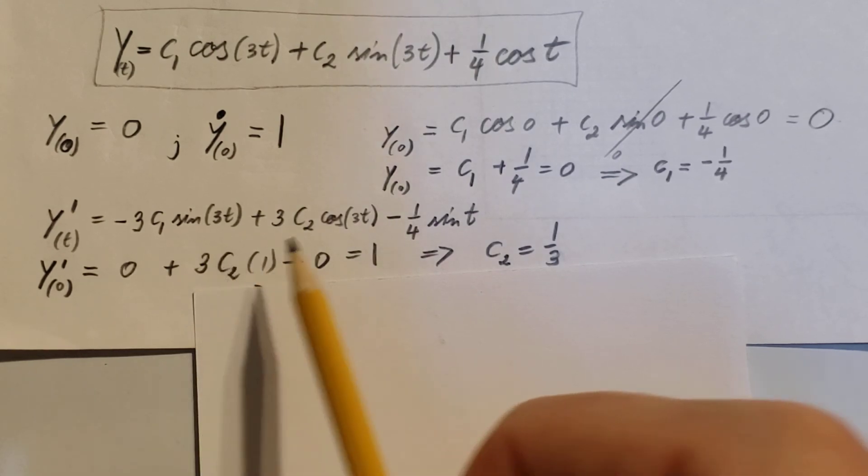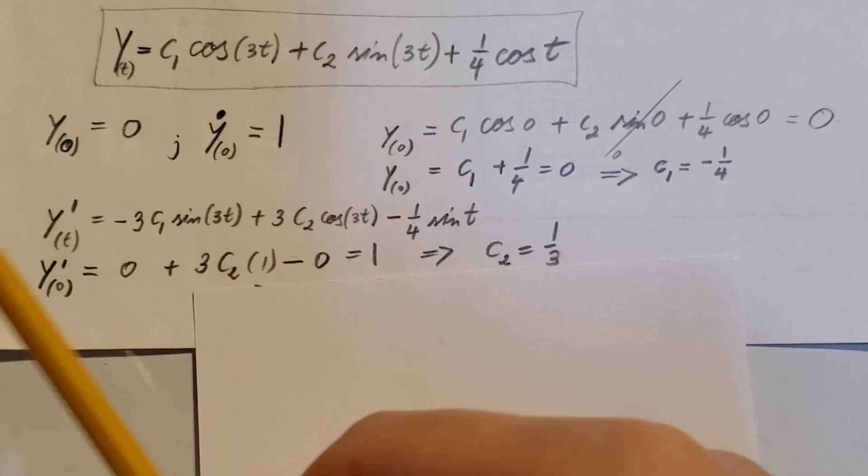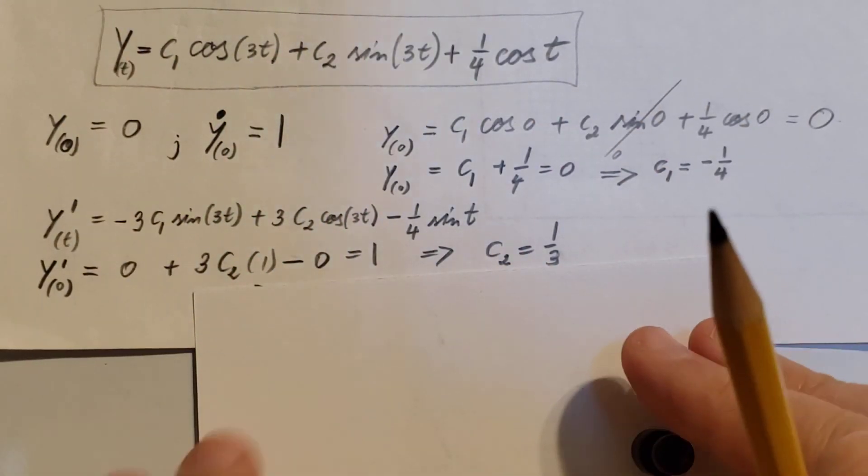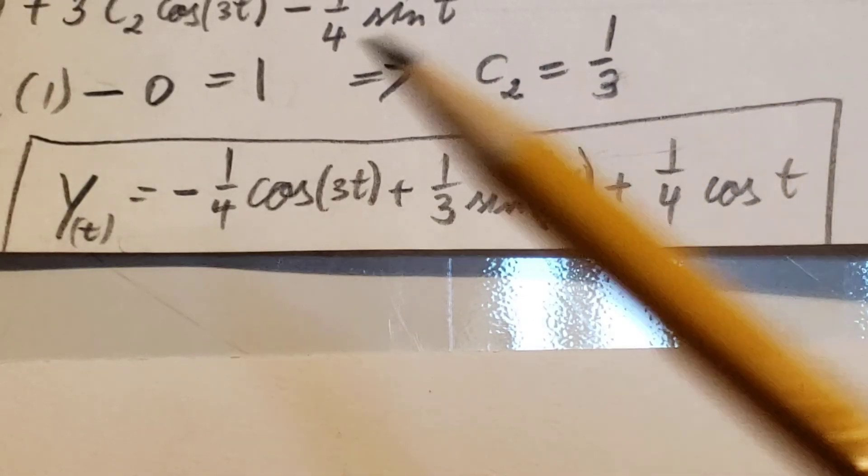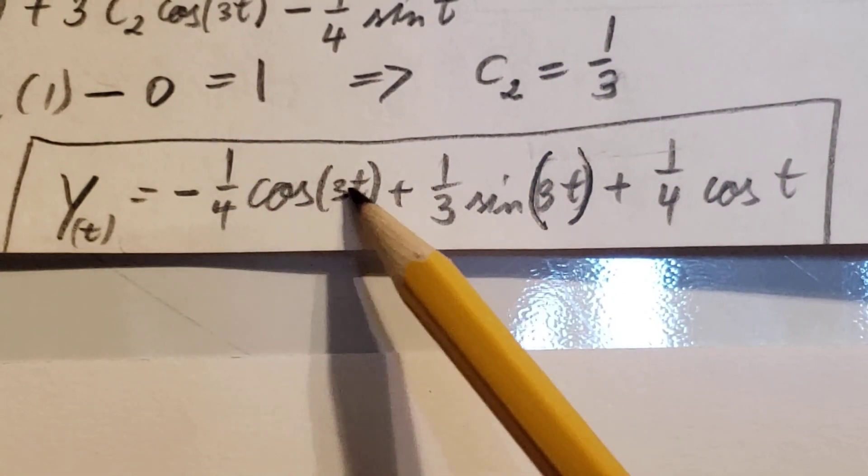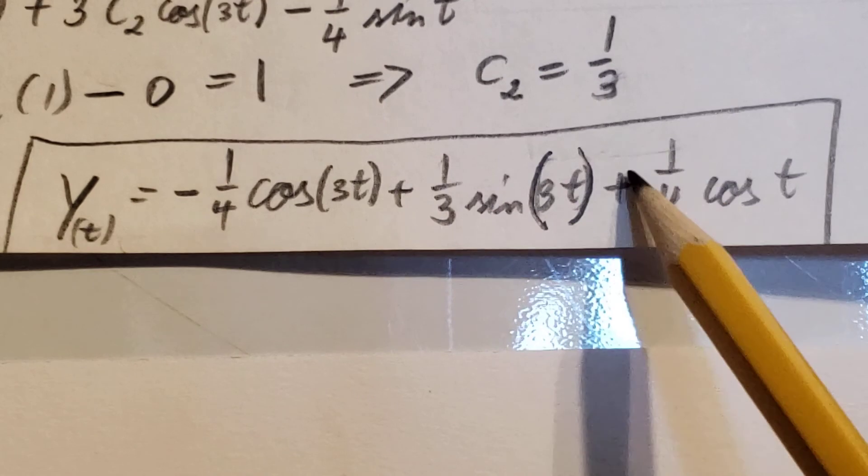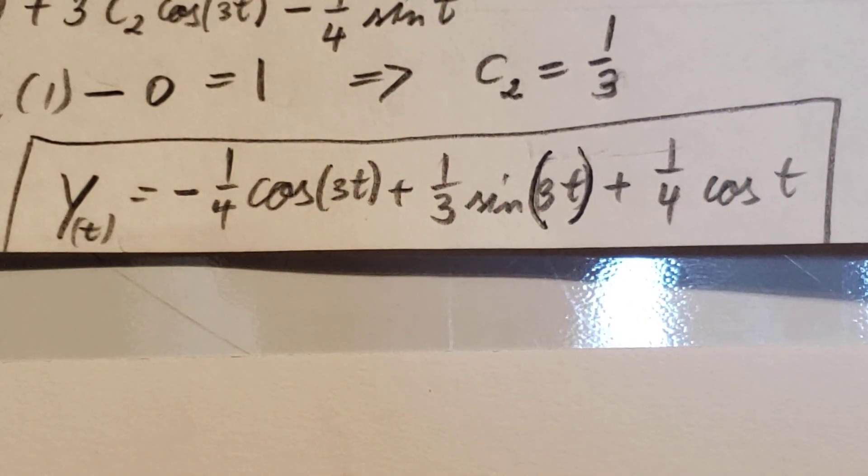All that is left is to update our solution. Our final solution for the problem is y(t) equals minus one-fourth cosine 3t plus one-third sine 3t plus one-fourth cosine t. There you have it. Please subscribe and like the video. Thank you for watching, have a good day.